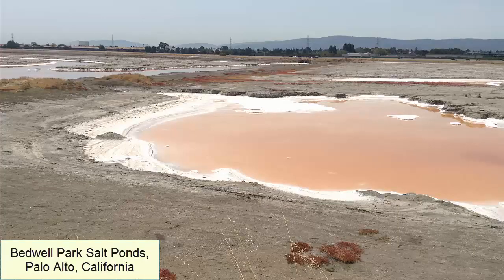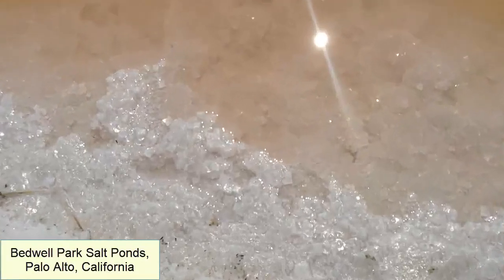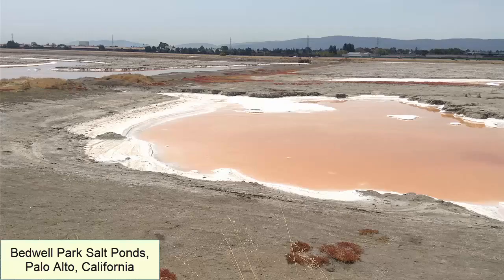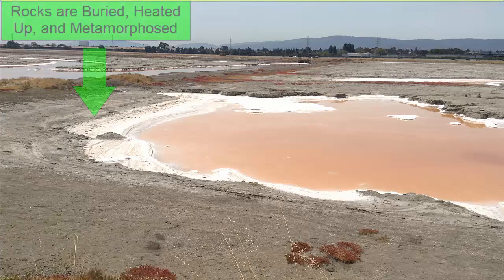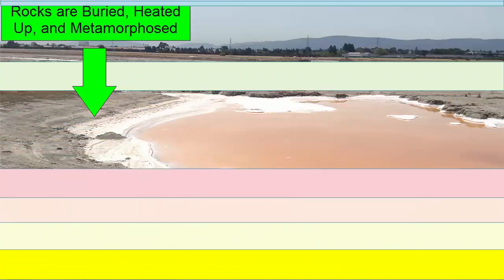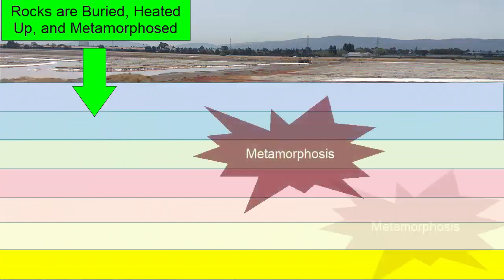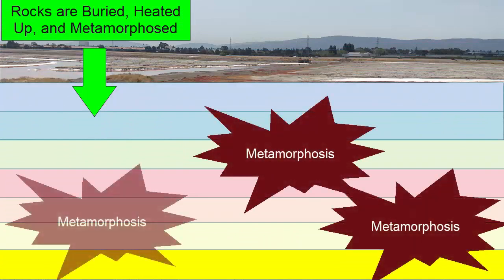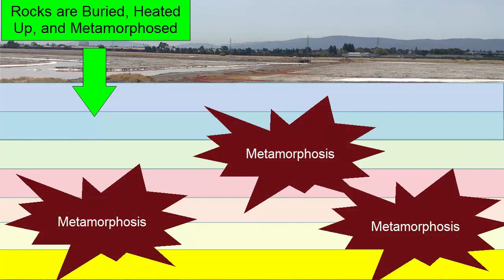For example, imagine that a shallow seabed evaporates and leaves behind salt crystals — a sedimentary rock. The setting is a warm, dry climate near the ocean. Over time, these rocks can get buried and heated up and put under pressure, where they then change or metamorphose into new rock. Now the setting is deep under a continent.